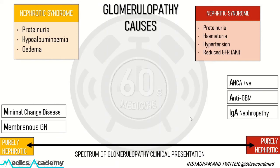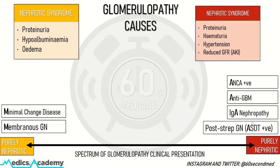Some purely nephritic diseases include the ANCA-positive diseases, anti-glomerular basement membrane disease, IgA nephropathy, and post-streptococcal glomerulonephritis, which will give a positive ASO (anti-streptolysin O) test — so all of them have the letter A involved.